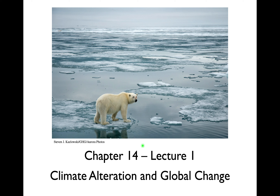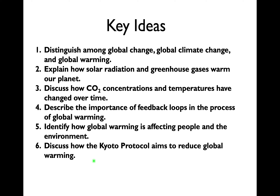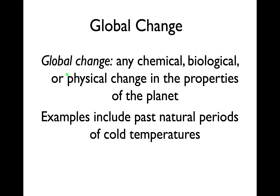Welcome back everybody. We are starting a new chapter in environmental science today: climate alteration and global change. We've been building up to this with the air pollution chapter, but now we're diving into how the constituents in our atmosphere affect the globe — not just temperature, but the broader altering effects. This sad photo shows a polar bear without enough ice. Polar bears need ice fields to hunt seals, and there's a whole ecosystem around them that climate change is disrupting as melting pushes ice back into liquid form.